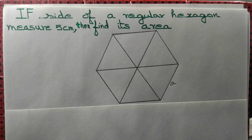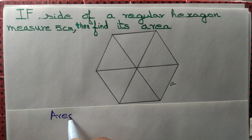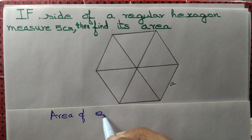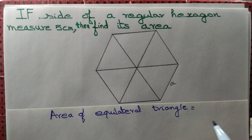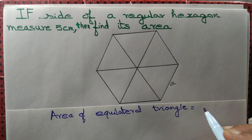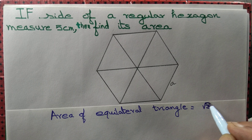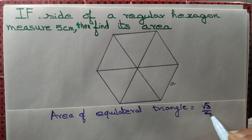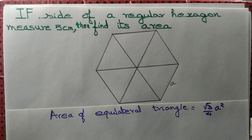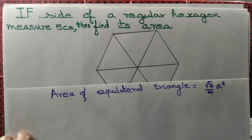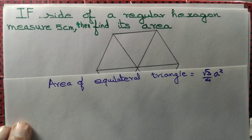Now, let us find the area of the equilateral triangle. We know that the area of an equilateral triangle is equal to √3/4 · a².